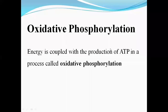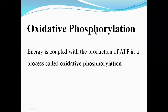Oxidative phosphorylation involves oxidation and phosphorylation occurring simultaneously. The energy that is released is captured for the production of ATP, so the energy is coupled with ATP production. This whole process together is known as oxidative phosphorylation. For oxidation, the electron transport chain is responsible, and for phosphorylation, ATP synthase is responsible.